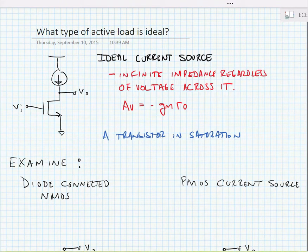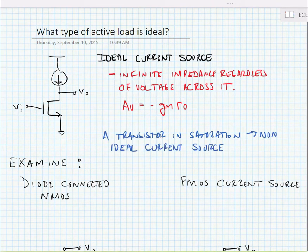So if we could find an ideal current source, it would give us the maximum possible gain from the transistor. Now we note that a transistor in saturation looks like a non-ideal current source.